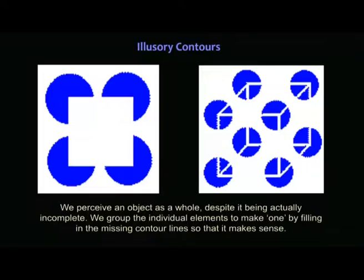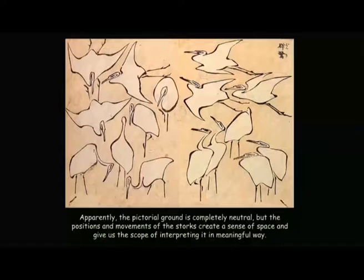Illusory contours empower us the viewers to see things which are not there but are suggested nevertheless. We perceive an object as a whole despite it being actually incomplete — we group individual elements to make one by filling in the missing contour lines. Look at these two diagrams: you can see a pattern, a square, though certain portions have not been shown, but in our mind we fill in the gap and complete what is incomplete in the actual drawing.